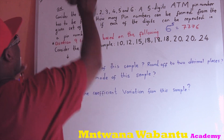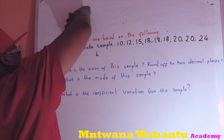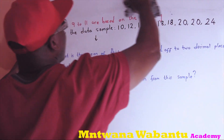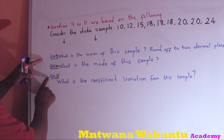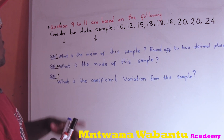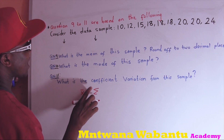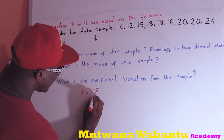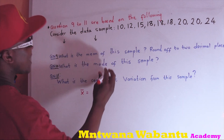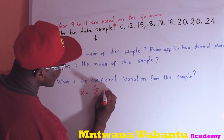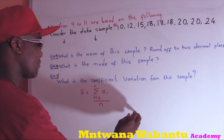Now we go to question number 9. Questions 9 to 11 are all based on the following data. So the second question says find the mean of the following. To get the mean, you take the sum of all the data values — there are nine of them — and divide by the total number of them. So mean equals the sum of all x values divided by how many of them there are.